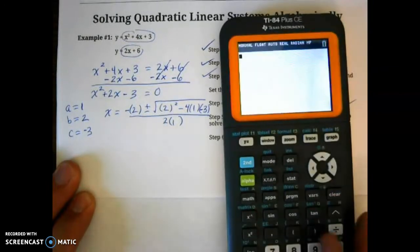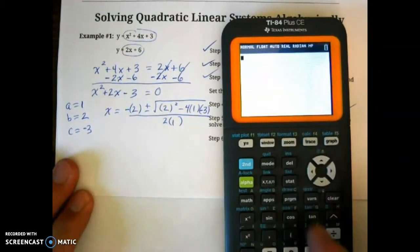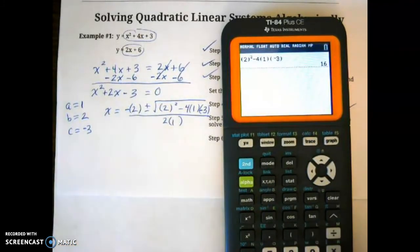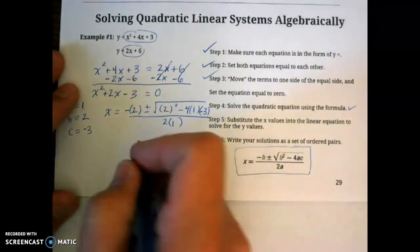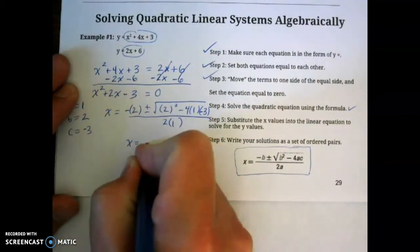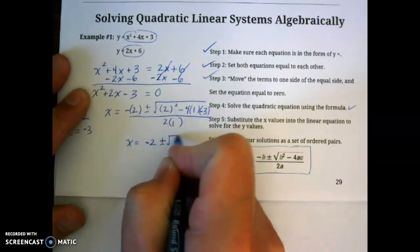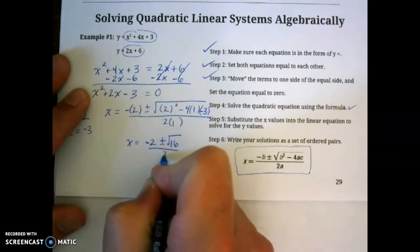So right now, we did step 4. I'm going to take what's underneath the square root and put it into your calculator. So I have 2 to the second power minus 4 times 1 times negative 3. So underneath the square root, we're going to have 16. So we have x equals negative 2. I'm going to take the negative out in front, get rid of the parentheses.